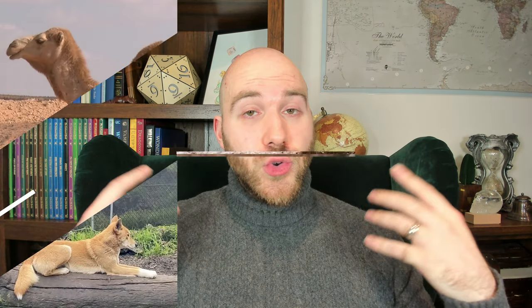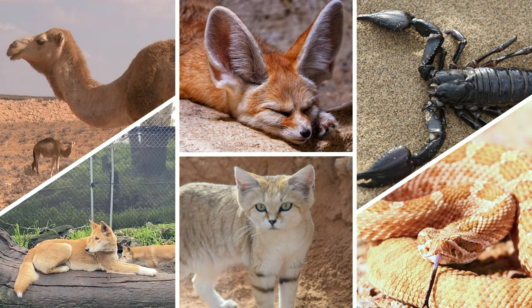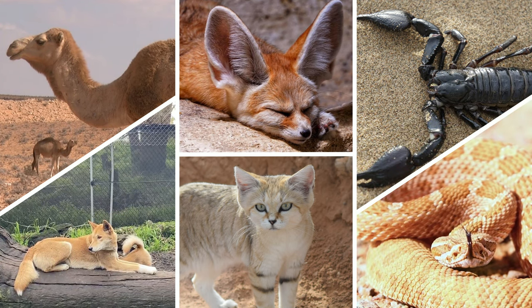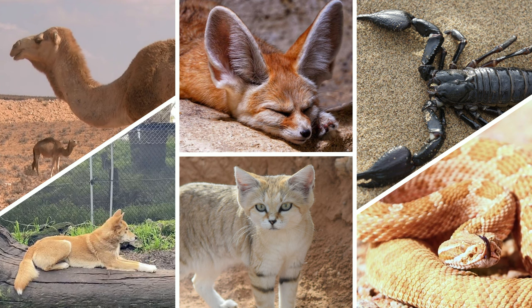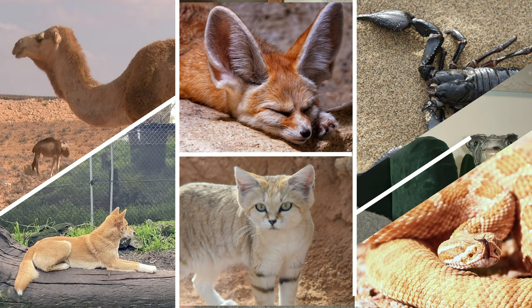We've talked lots about desert flora, but there are definitely fauna that make the deserts their home too — though their numbers aren't extensive, especially within cold deserts. Some iconic desert dwellers on Earth include camels, dingoes, fennec foxes, sand cats, scorpions, and snakes.